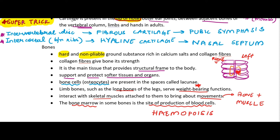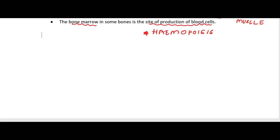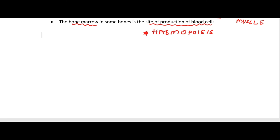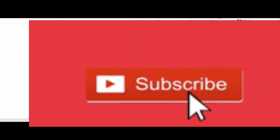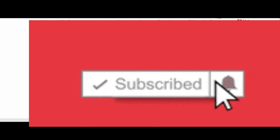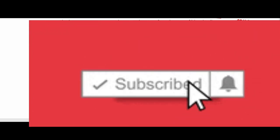Another important function of bone is hemopoiesis. Bones contain bone marrow, which is the site of hemopoiesis — 'hemo' means blood, 'poiesis' means making — so bone marrow is the site of production of blood cells. Muscular tissue will be covered in the chapter on locomotion and movement, cardiac tissue in the circulatory system chapter, and neural tissue in neural control and coordination.